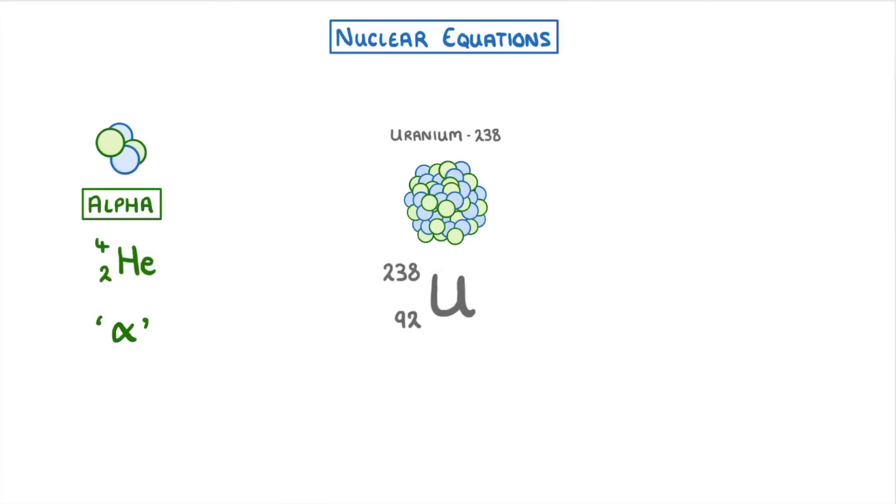So when an unstable nucleus, like uranium-238, undergoes alpha decay and emits one of these alpha particles, it's going to lose two protons and two neutrons. To show this, we have to subtract 4 from its mass number and 2 from its atomic number.